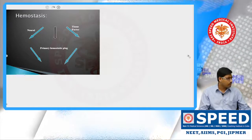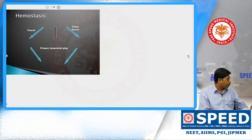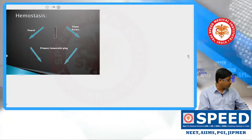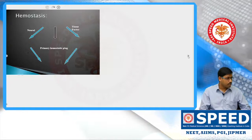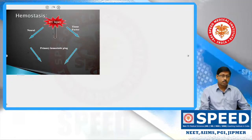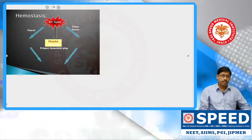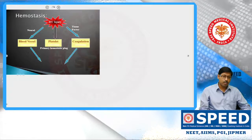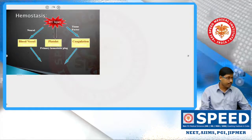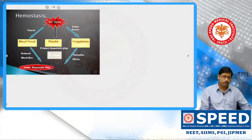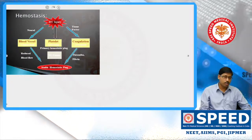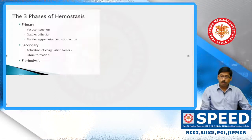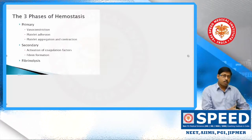There is the primary hemostatic plug formed by platelet plug formation, then tissue factor release, and the coagulation cascade activates, forming the secondary hemostatic response. Whenever there is a blood vessel injury, platelet plug formation occurs, the blood vessel gets vasoconstricted, and the coagulation cascade activates. All this leads to formation of a stable platelet thrombus — a stable hemostatic plug is formed.